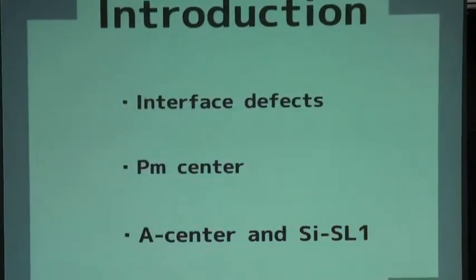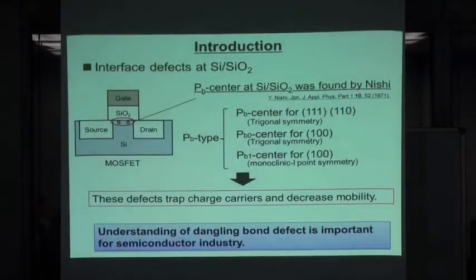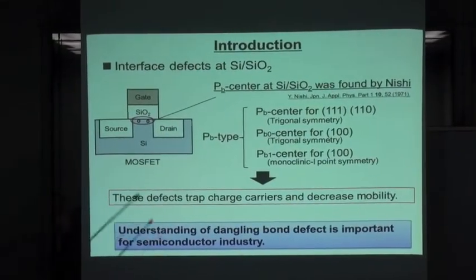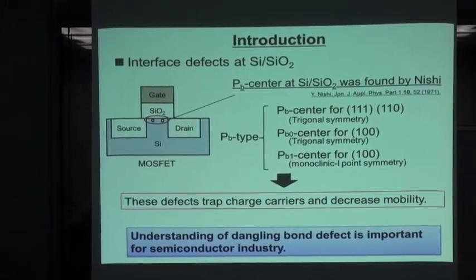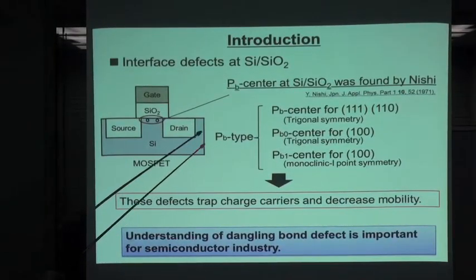First of all, I will talk about the introduction. In order to understand what is KU1, it is important to know the history of dangling bond type studies. I will explain about this topic.